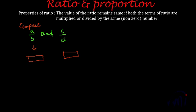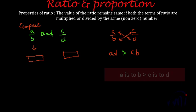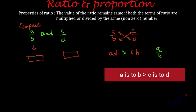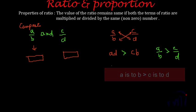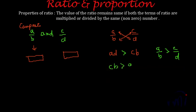So suppose you have ratio a is to b and c is to d. What you do is you just cross multiply these two, so you will get ad and cb. If ad is greater than cb, then ab is greater than cd.